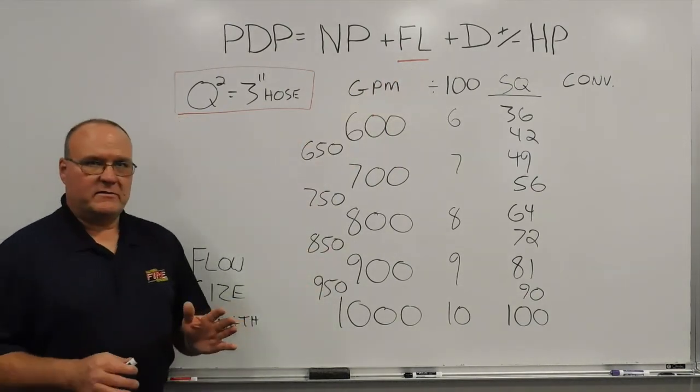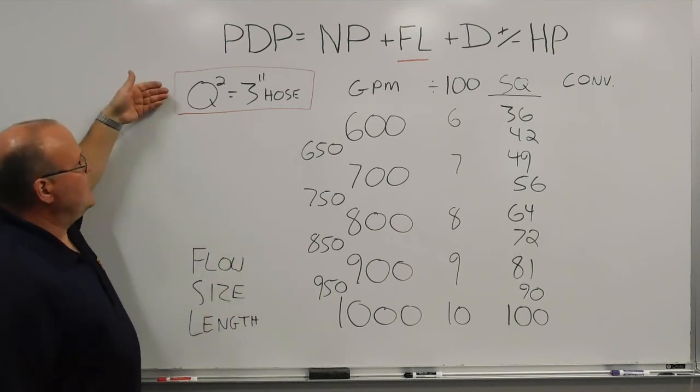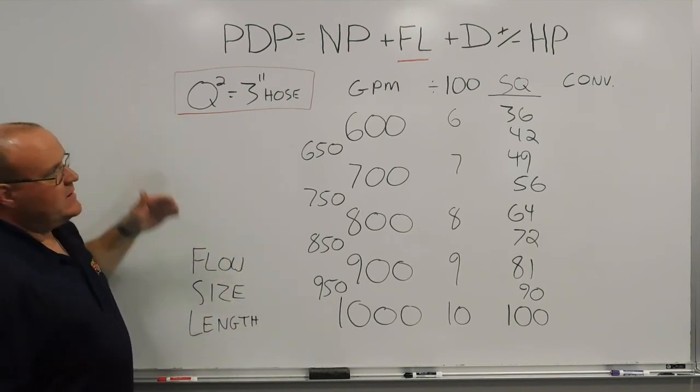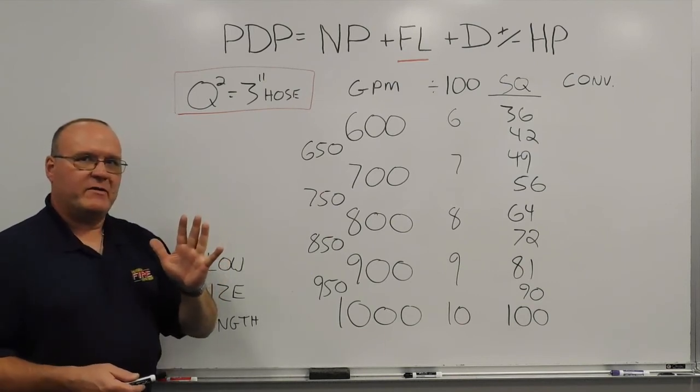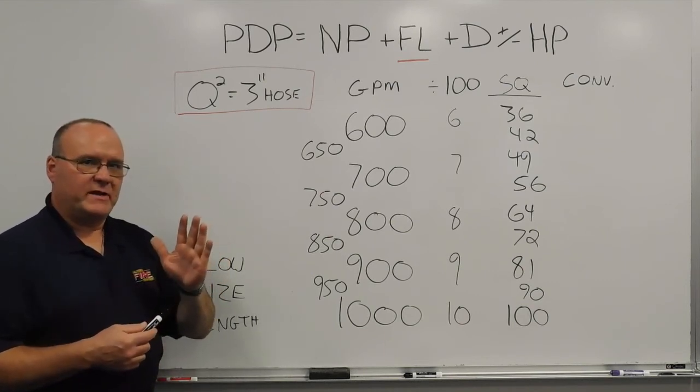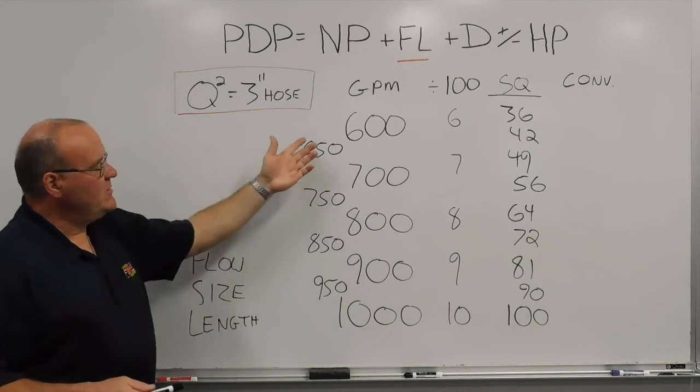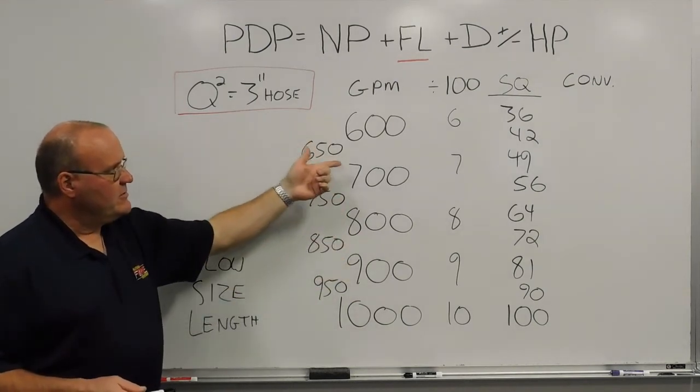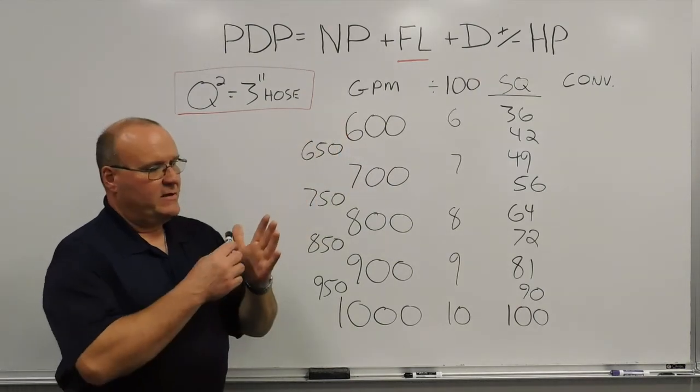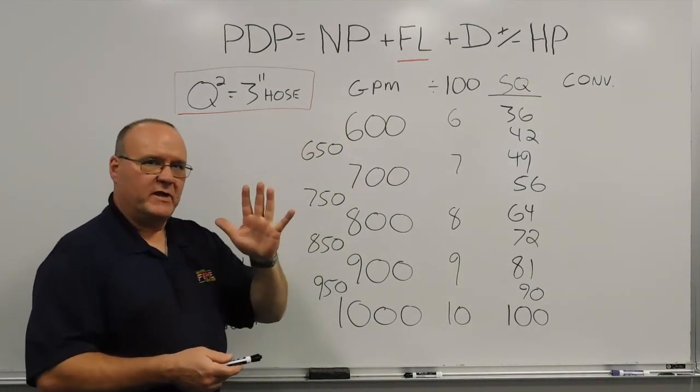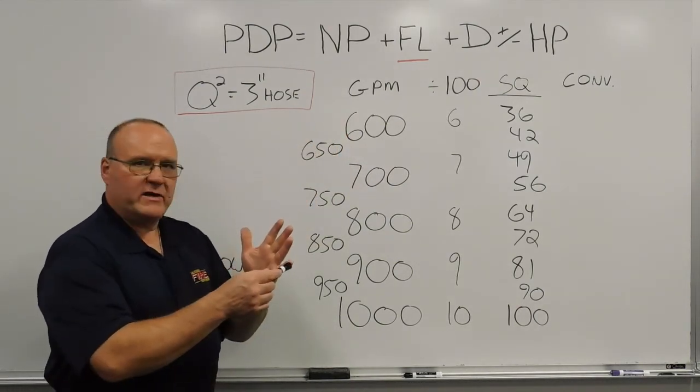So the baseline, we always start with, we end up with a 3 inch hose number and in earlier examples we talked about using the hand method using 100 to 500 gallons a minute and essentially what we would do is knock off the zeros or divide by 100 from the flow that we have and then each of those would be represented on the hand. So from 100 to 500 gallons a minute,